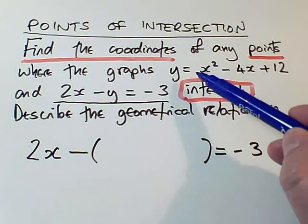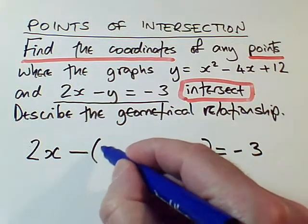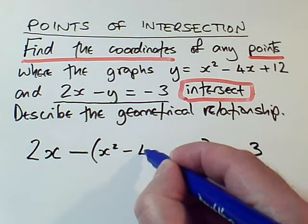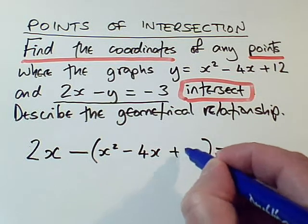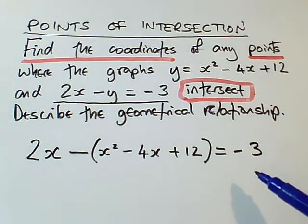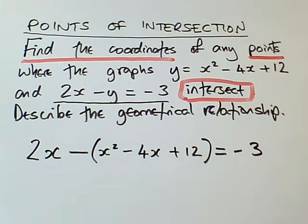To find out what y is, I need to refer back to the other equation. This tells me that y equals x² - 4x + 12. So where y is, I replace it by the bracket containing x² - 4x + 12. Now I've got an expression just with x's in, so this is going to turn into an equation I can solve for x's.